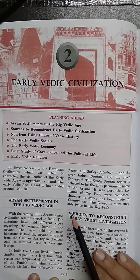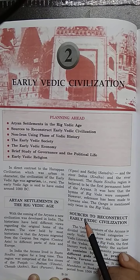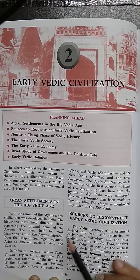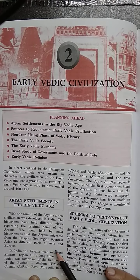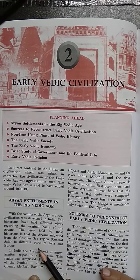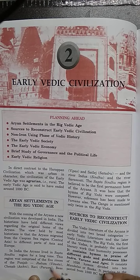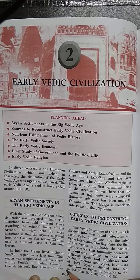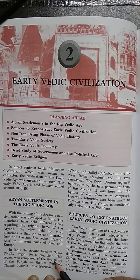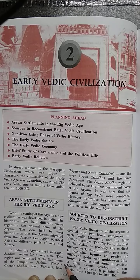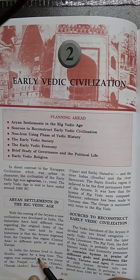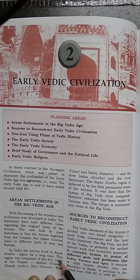Aryans belong to Central Asia. They came from Central Asia, by way of the Caspian Sea, towards Asia and Europe. Some Aryans moved towards Asia, especially towards India, and some towards Europe. In India, the Aryans lived in the Sapt Sindhu region for a long time.